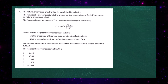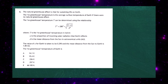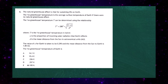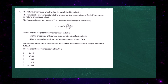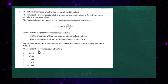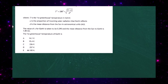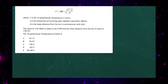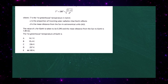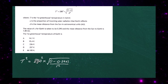It looks a very harsh question, but all it's really testing is whether we can put some data into an expression and get the answer. So let's do that using our calculators. We've got T² = 280² × √(1 − α) / d², and we put in the appropriate values for α and d.